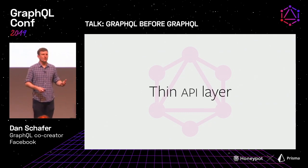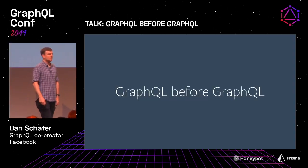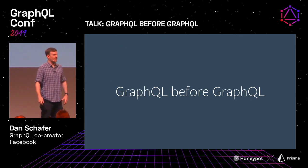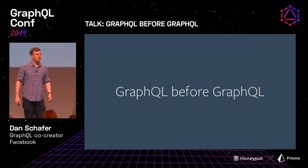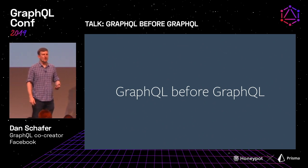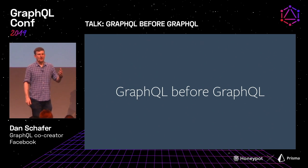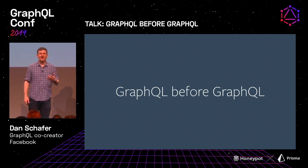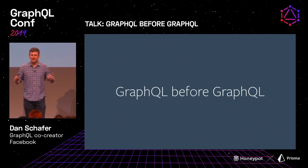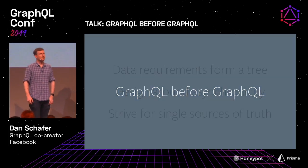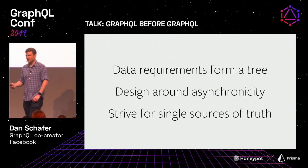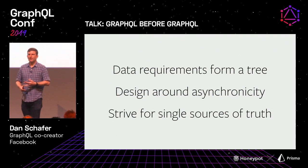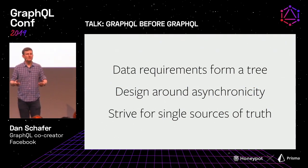So this has been GraphQL before GraphQL — that initial four-plus years leading up to February 2012 that put us in a place where, with three people sitting at a pod of desks trying to build this thing out in two weeks, we had the underlying infrastructure and concepts that allowed us to build that initial prototype. Those three principles — the idea that data requirements form a tree, designing around asynchronicity, and striving for single sources of truth — are very clear in the GraphQL spec and in the design of GraphQL implementations.